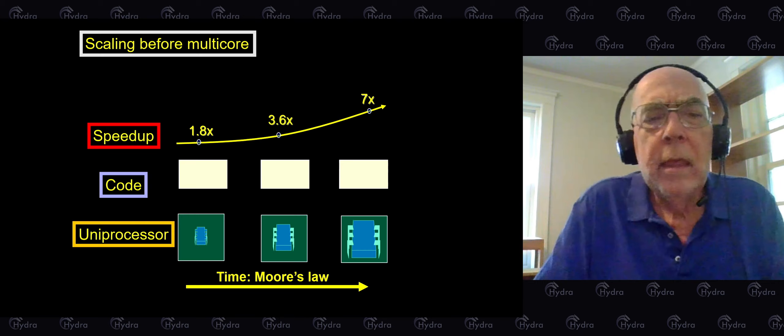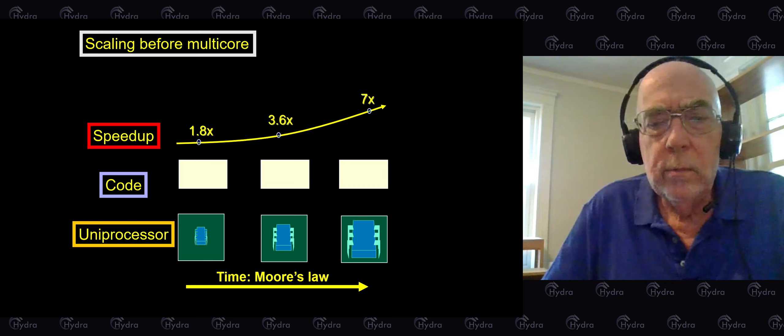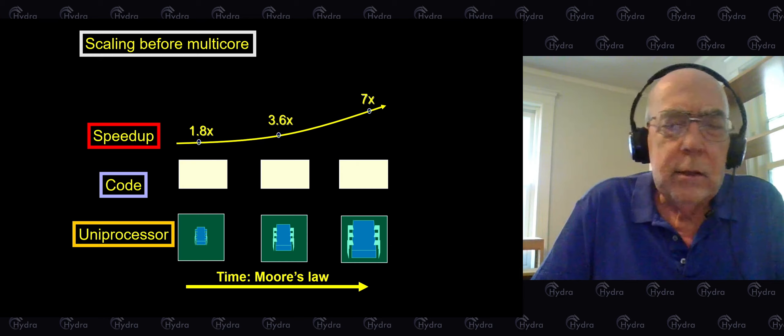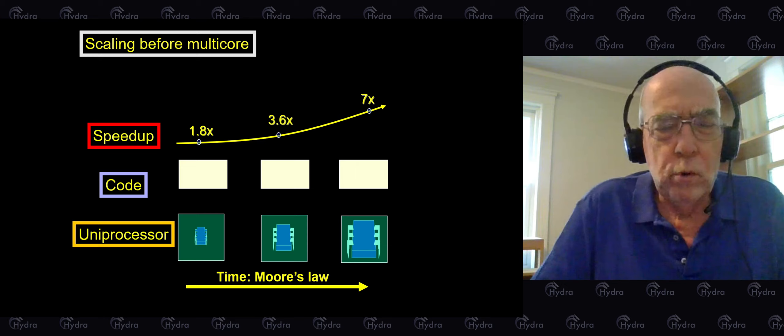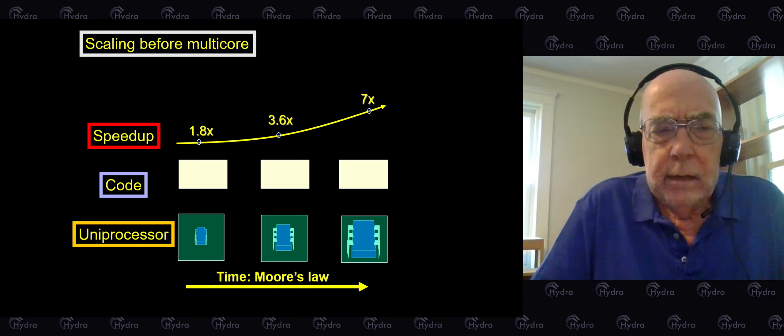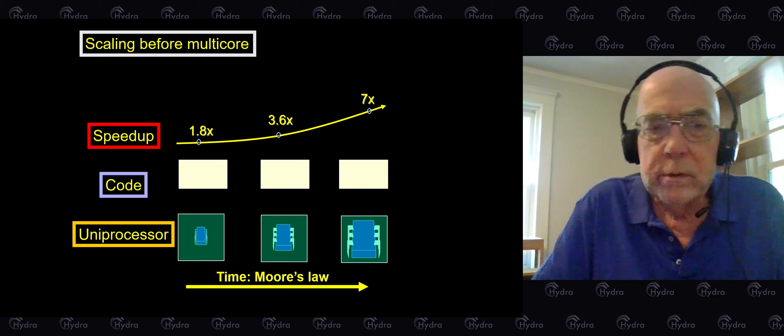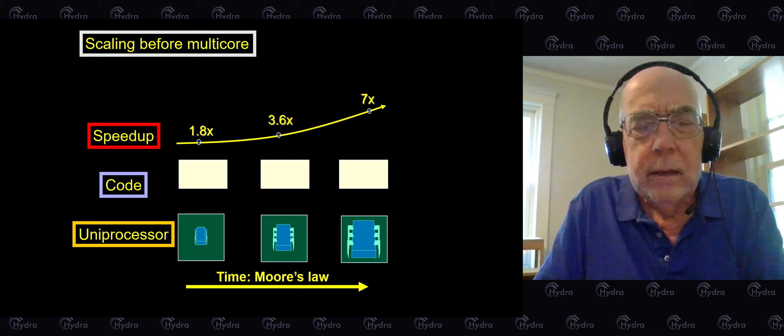This has implications for software, which is what we really care about — this isn't a lecture so much on hardware, it's really about how to write programs. In the old days, there was something called the free ride of software: you could leave the code the same and your uniprocessor would get faster and faster. The picture shows it getting bigger to indicate it's stronger, when of course it actually got smaller.